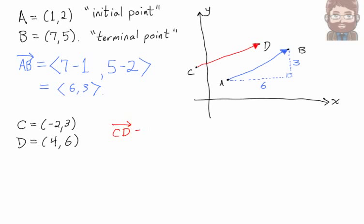How can you describe that vector? Well, you do the same calculation as before. To travel from C to D, what's your change in the x direction? And what's your change in the y direction? So as before, we do some subtraction. We find that we get 6 comma 3 for the vector CD.